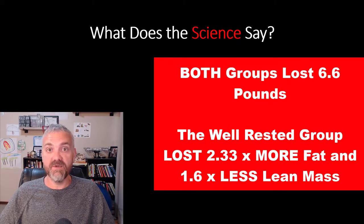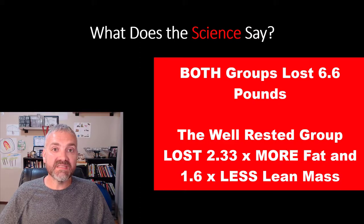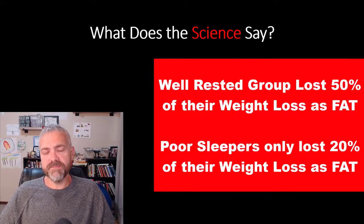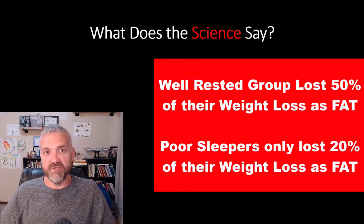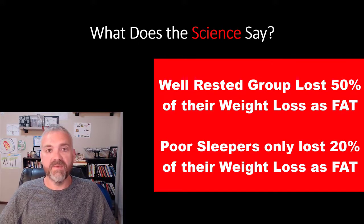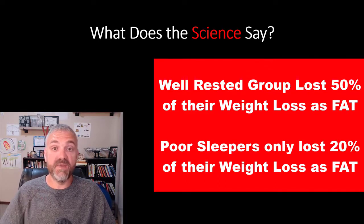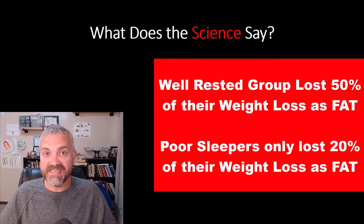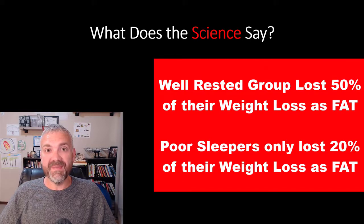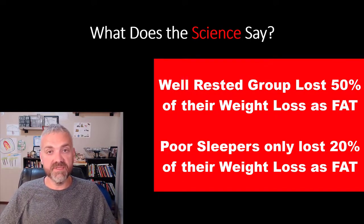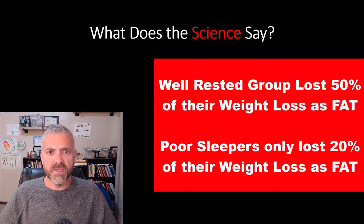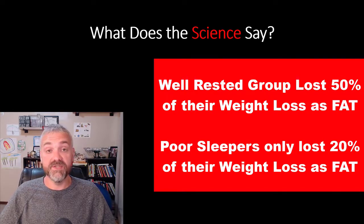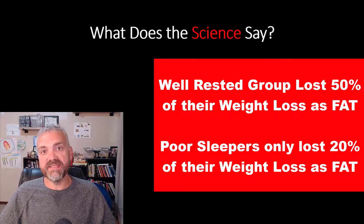But the group that slept eight and a half hours lost 2.33 times more fat and 1.6 times less lean tissue. So they both lost the same amount of weight, but the composition of the weight they lost was completely different. So your good sleepers, they lost 3.1 pounds of fat and around 3.3 pounds of lean tissue. So that's not great. I'll come back to how we can get that 3.3 number lower in just a moment. But the poor sleepers, only 20% of the weight they lost was fat. They lost 5.3 pounds of lean tissue and only 1.3 pounds of fat. So that means that 80% of the weight they lost was lean tissue that you don't want to lose because muscle is metabolically active. It helps your body use glucose. It keeps you functional.